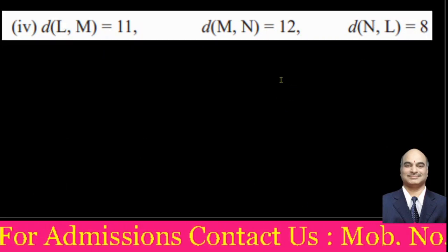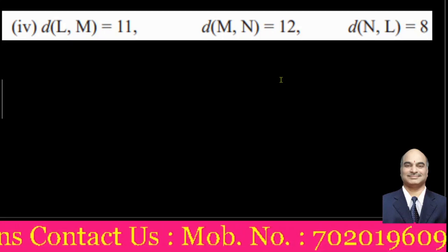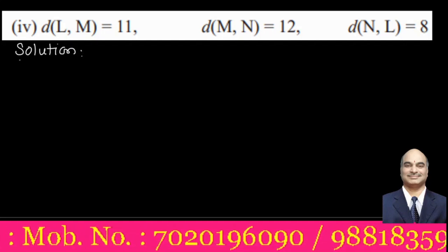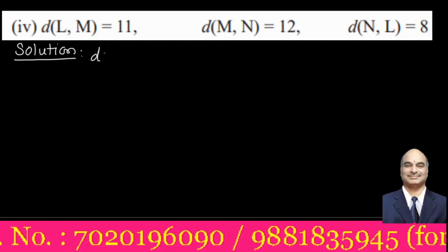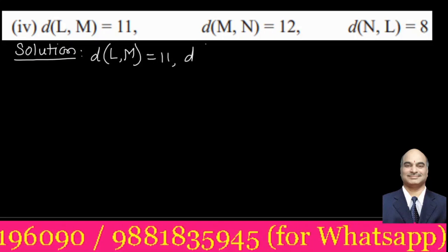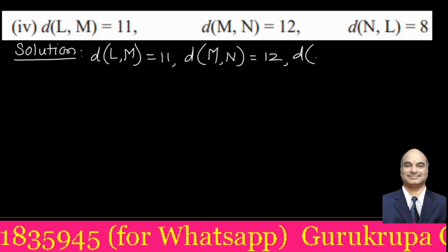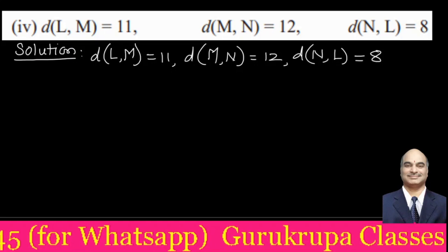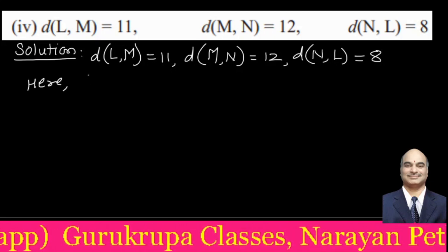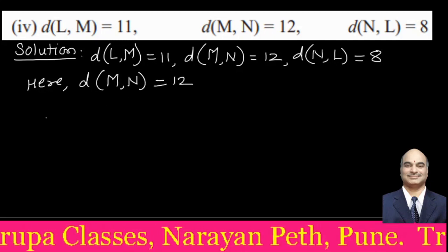The fourth question gives three points L, M, N. In the solution we write down the given distances: distance LM is 11, distance MN is 12, and distance NL is 8. The greater distance is MN which equals 12.